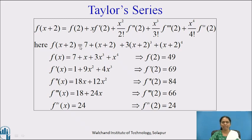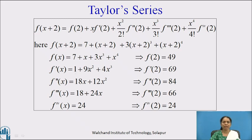Here f(x+2) is given as 7 + (x+2) + 3(x+2)³ + (x+2)⁴. From this, we can get f(x) by removing the +2 from each term: f(x) = 7 + x + 3x³ + x⁴. The first derivative f'(x) = 1 + 9x² + 4x³. The second derivative f''(x) = 18x + 12x². The third derivative f'''(x) = 18 + 24x, and the fourth derivative f⁽⁴⁾(x) = 24.